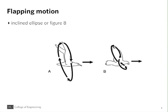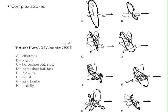To understand flapping motion, consider that the tips of the wing in the flapping stroke trace either an inclined ellipse or a figure eight in the air. We can differentiate two phases in this stroke: the downstroke, shown here in red, and the upstroke. Birds exhibit the inclined ellipse or the figure eight stroke patterns.